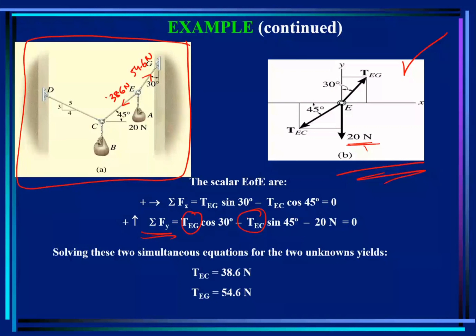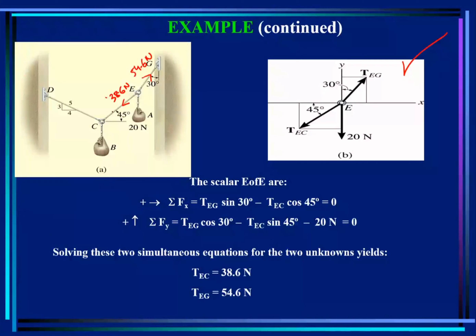Now I have calculated the two cable forces at E. I need to move to either point C or point D. Comparing C and D, point C has more known values and fewer unknowns, so we start from C. Remember, if there's any point where there's no known value given, there's no use starting from there. So let's look at point C.